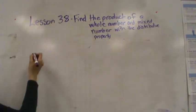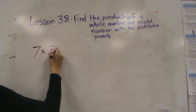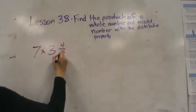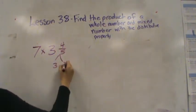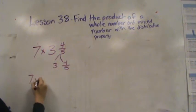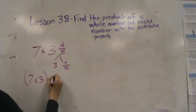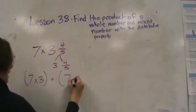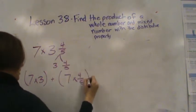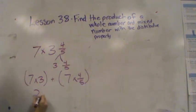All right, let's try another one. 7 times 3 and 4 fifths. Remember the first thing I do is break up the whole and the fraction. So I have 7 times 3 plus 7 times 4 fifths. This is easy peasy. 7 times 3 is 21.